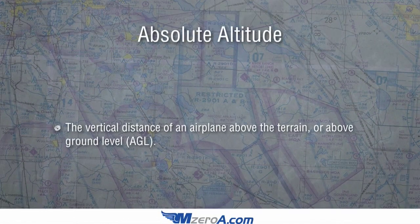Another one here is absolute altitude. This one is always changing — the vertical distance of an airplane above the terrain, or above ground level, AGL. Think if you had a laser beam that could shoot straight down like a radar altimeter and it would hit the ground and read back the altitude. Well, as you went over mountains, passed over towers, houses — that laser beam would get shorter and longer real quick. That's what your absolute altitude is. It's constantly changing.